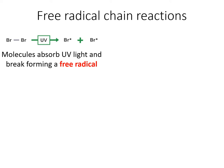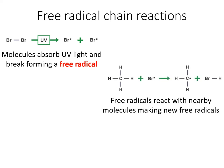Now they're looking to become more stable. They could react with themselves, but maybe they'll come across something else nearby, like this methane molecule CH4. The free radical can react with nearby molecules and make new free radicals. Notice that this hydrogen has dropped off, reacted with the Br free radical and formed HBr, but now we're left with this methyl free radical CH3 with an unpaired electron.